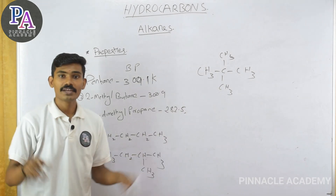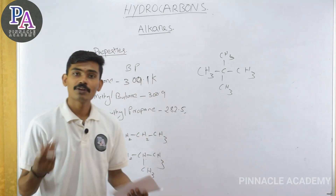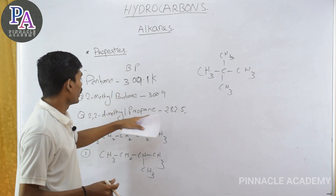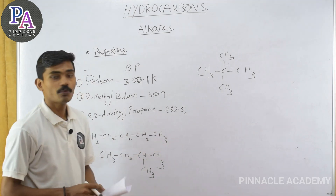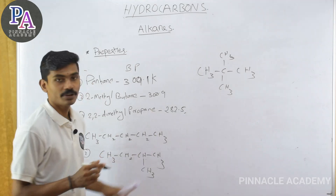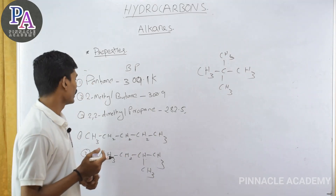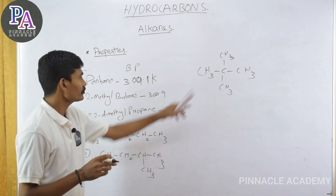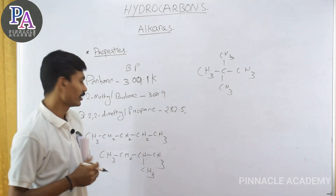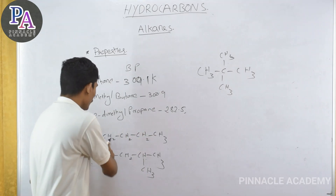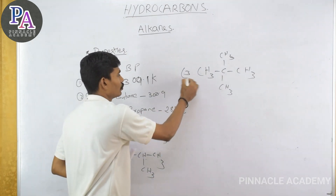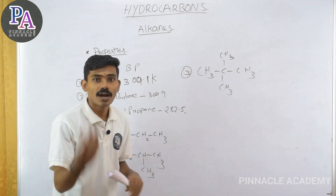Even though the molecular weight is the same for all three isomers, the boiling points are different. Pentane has a boiling point of 309 K, while 2,2-dimethylpropane has a boiling point of 282.5 K. Pentane is a long, straight chain, whereas 2,2-dimethylpropane is highly branched.